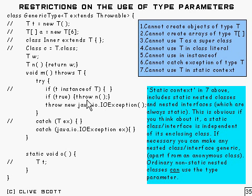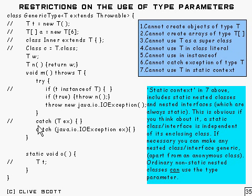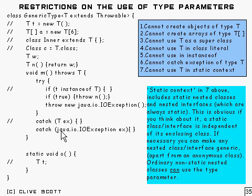You can certainly throw T — where T returns a type T which is Throwable, so you can throw it, just by calling it like that, that's not a problem. You can also throw a java.io exception, that's not a problem. However, you can't catch an exception of type T, because of the way exception handling works — it checks the type of the exception thrown and matches against that type, and with type parameters it has no knowledge of what the type is, so there's no way it can do that.